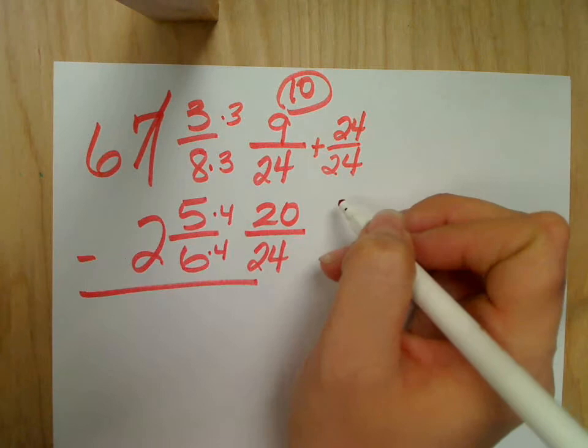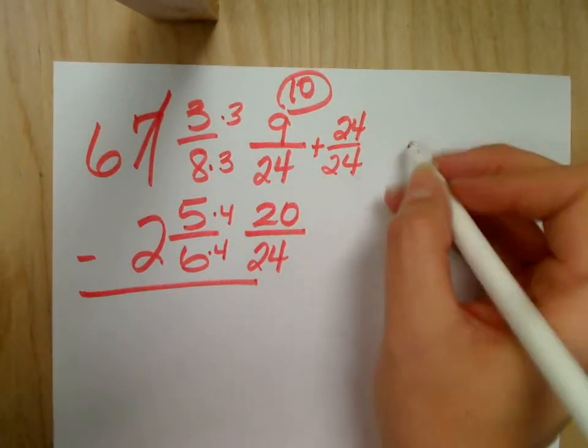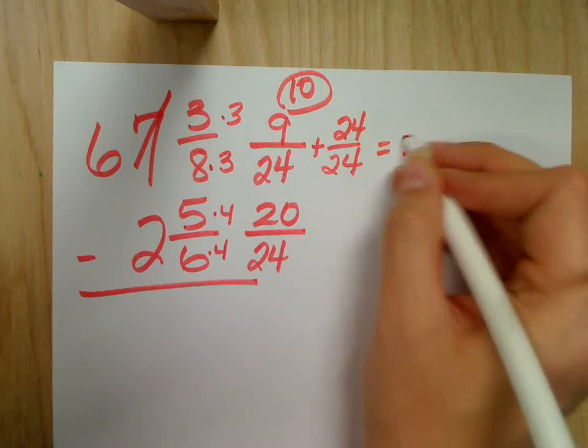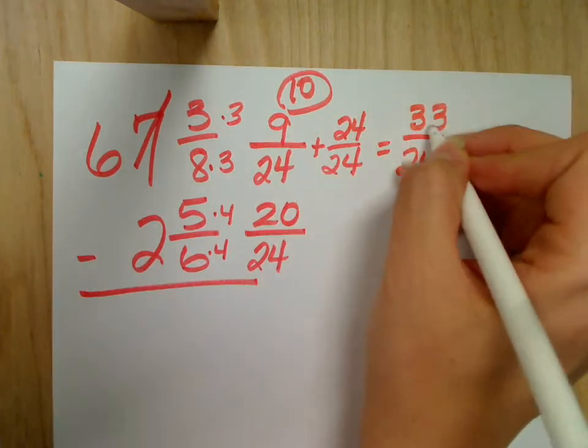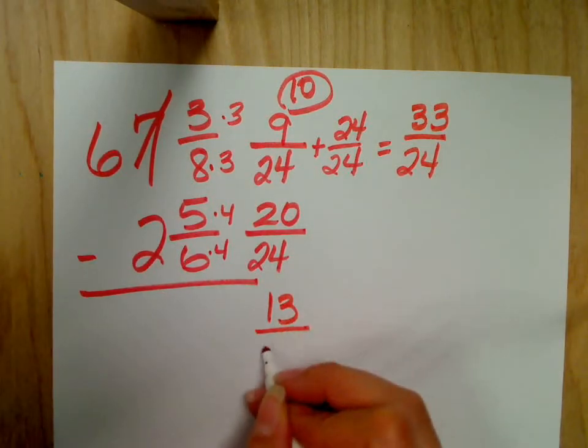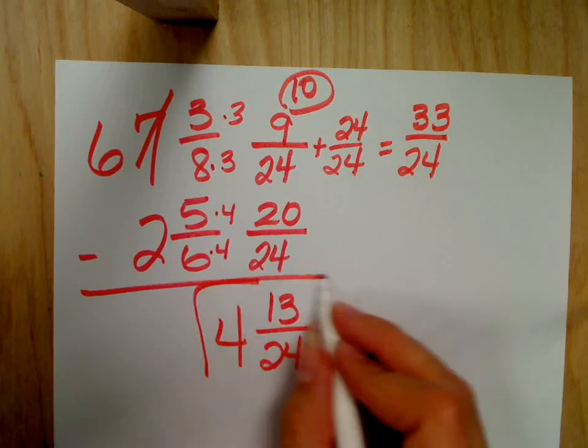Now, I'm going to add these together. When I add fractions, I've got common denominator already, so I keep it exactly the same, 24. I'm going to add 24 plus 9 and get 33. 33 take away 20 is 13. Keep my denominator and subtract my whole numbers. And I'm done.